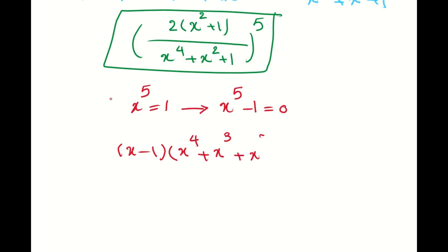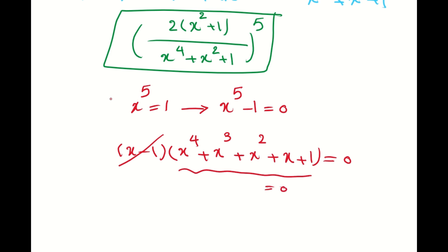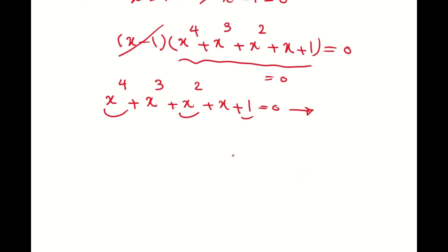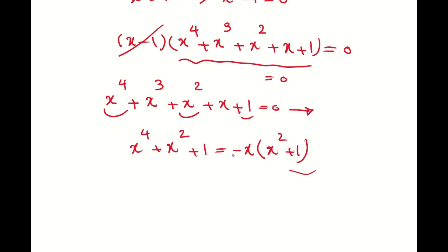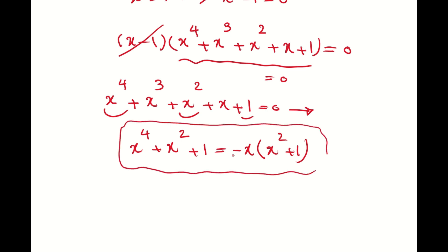We need this product to equal zero. Since x is not 1, the factor (x − 1) cannot be zero, so we must have x⁴ + x³ + x² + x + 1 = 0. Rearranging by moving x³ and x to the right-hand side, we get x⁴ + x² + 1 = −x(x² + 1). This is the key relationship we need.